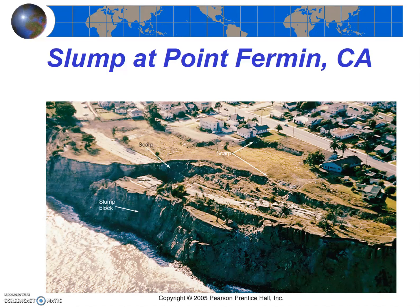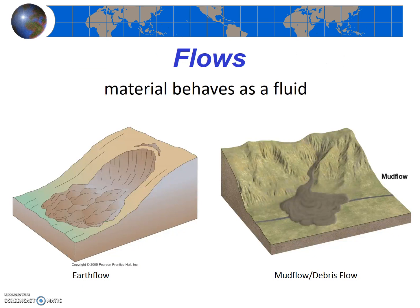This reminds us that perhaps roads and houses shouldn't be built right along the coastline. Flows, as the name suggests, occur when the moving material behaves like a viscous fluid. The two main types of flows are earth flows and mud flows, and they're quite different. Mud flows are also commonly called debris flows, as the fast-moving mud generally picks up trees and rocks and other debris as it moves. Although both have fluid motion, earth flows and mud flows are very different, as we'll see.